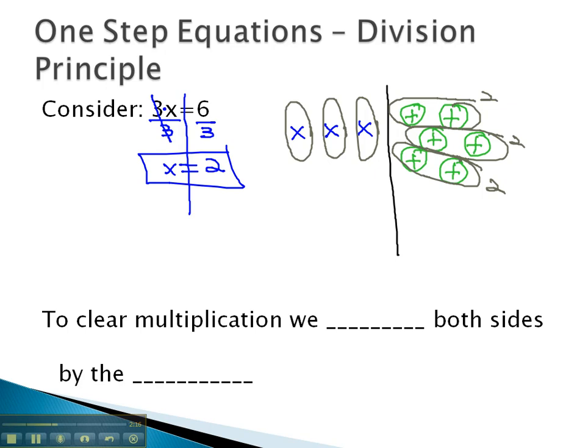And that's how we'll show our work, by dividing both sides by the number. To clear multiplication then, we do just the opposite of multiplying, which is to divide both sides by the number. And I want to stress that we divide by the number. A common error I see is students divide by the variable. Never divide by a variable, ever. There's reasons for that that we won't get into here, but never divide by a variable.